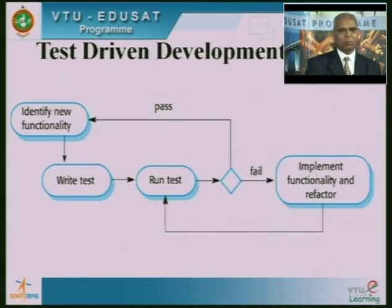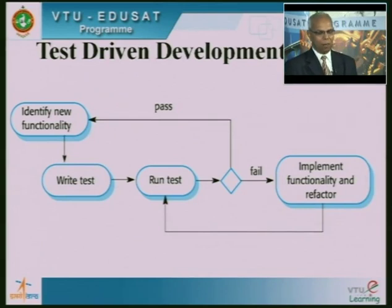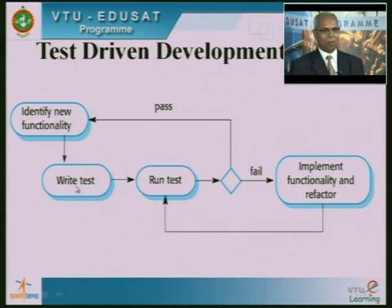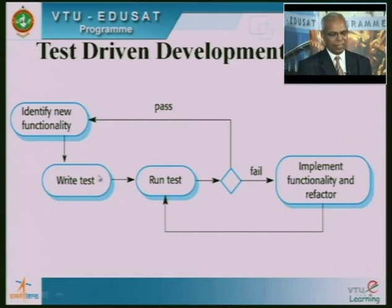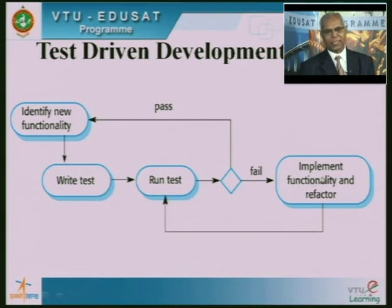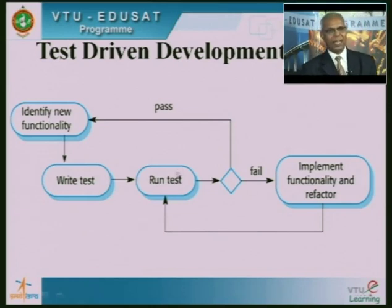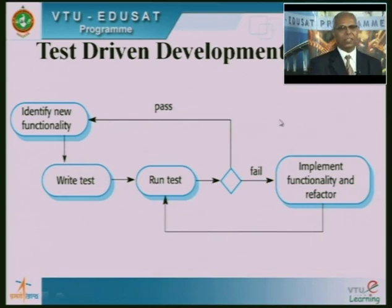Here is a diagram showing how test-driven development is done. First, we identify the new functionality to develop and write a test first — before writing the code. Then we develop the code and run the test. If the test fails, we change the functionality and run the test again until it passes. Once the test passes, we identify the next incremental module to develop and write a corresponding test. This continues until the entire code is developed. This model is called the test-driven development model.